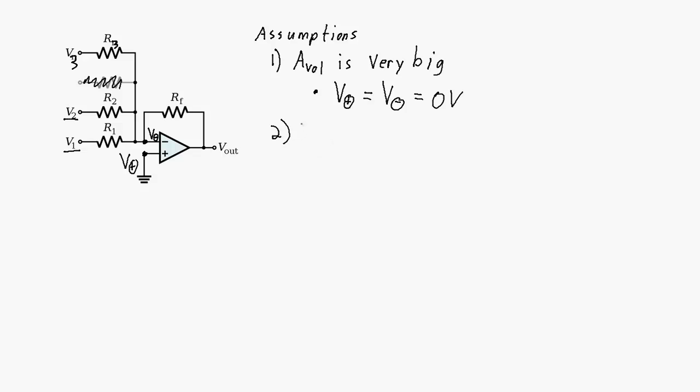The second assumption is that the input resistance of my inverting terminal and my non-inverting terminal is also very big. And what that means is that any current flowing through these resistors, well, none of that current flowing through these resistors here is going to flow into the non-inverting terminal.